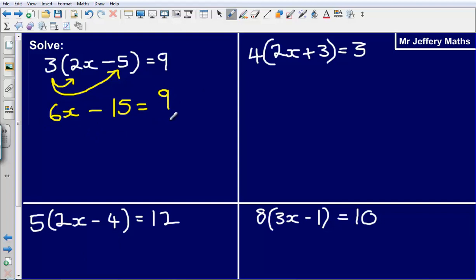Now what I've got is an equation that's very similar to the ones that we've already looked at. I've got 6x minus 15 is equal to 9. So to get rid of this minus 15, the first thing that I'm going to do is the opposite of minus 15. To undo that, just do the opposite. So the opposite of minus 15 is plus 15.